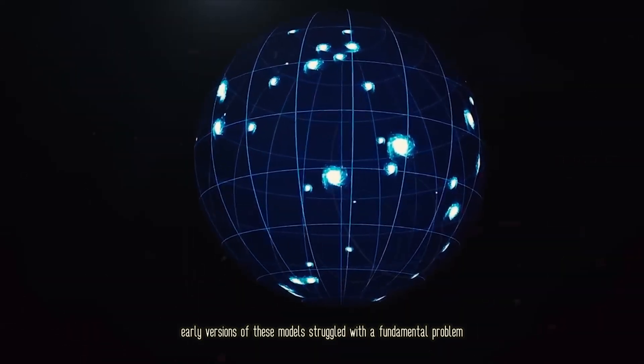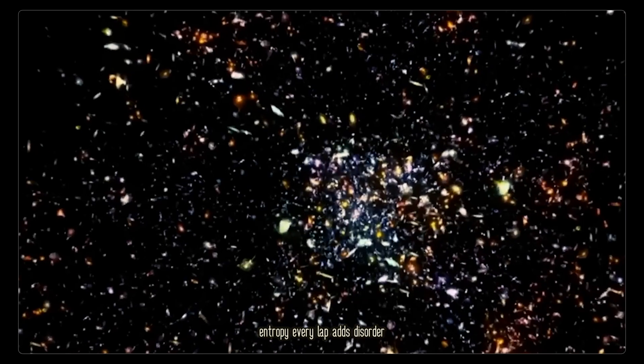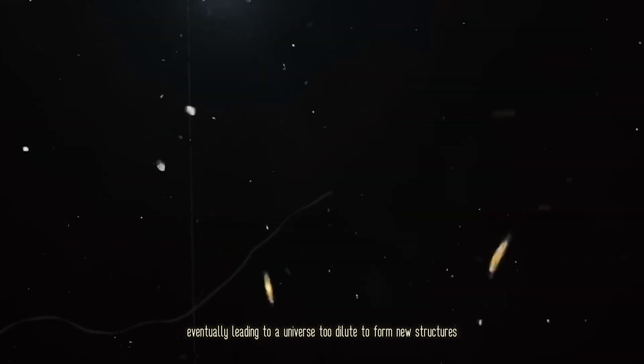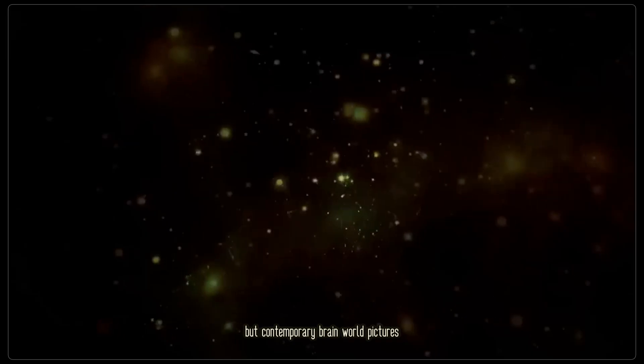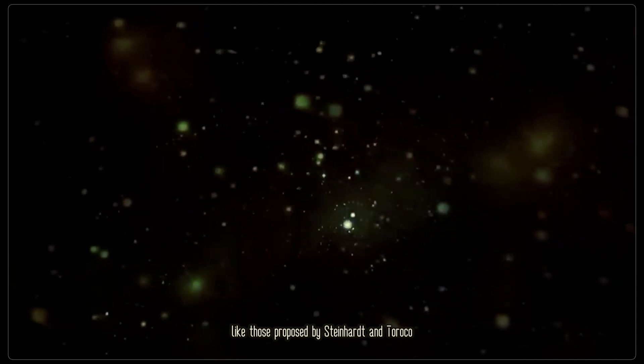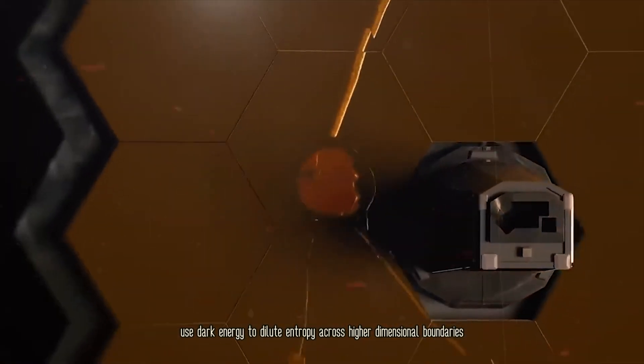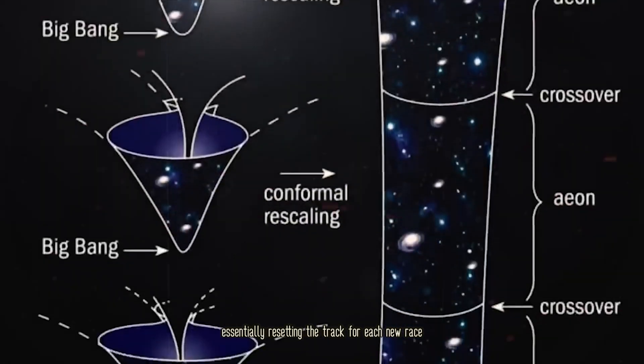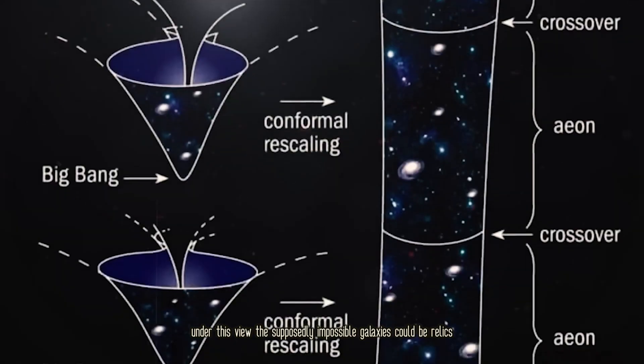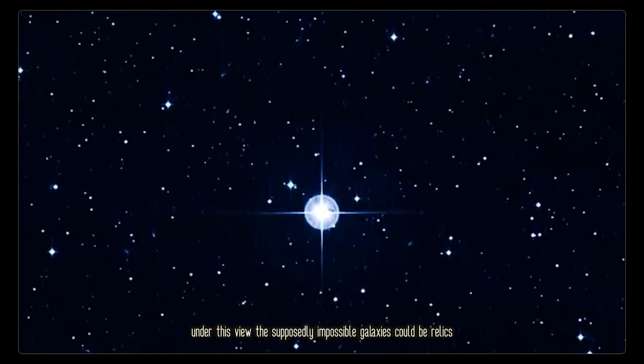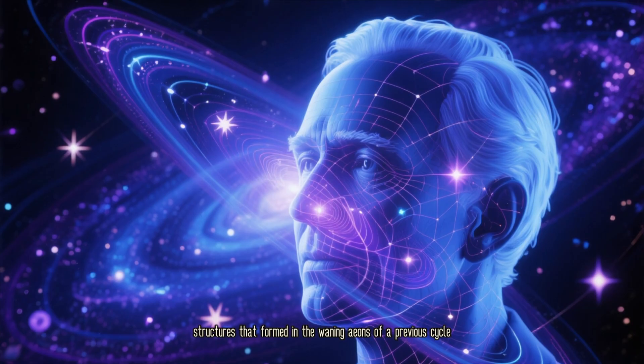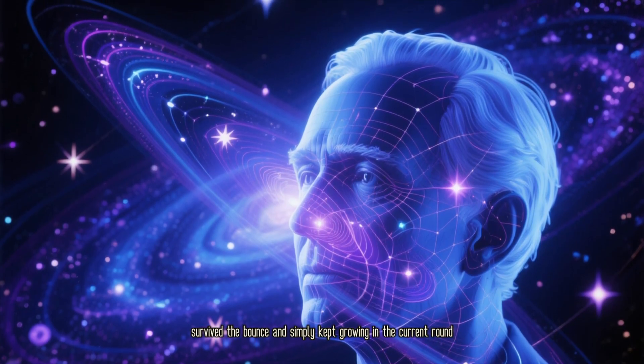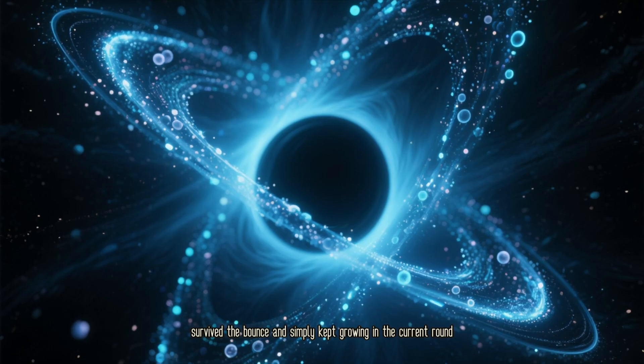Early versions of these models struggled with a fundamental problem—entropy. Every lap adds disorder, making later cycles longer and bigger, eventually leading to a universe too dilute to form new structures. But contemporary brane-world pictures, like those proposed by Steinhardt and Turok, use dark energy to dilute entropy across higher dimensional boundaries, essentially resetting the track for each new race. Under this view, the supposedly impossible galaxies could be relics, structures that formed in the waning eons of a previous cycle, survived the bounce, and simply kept growing in the current round.